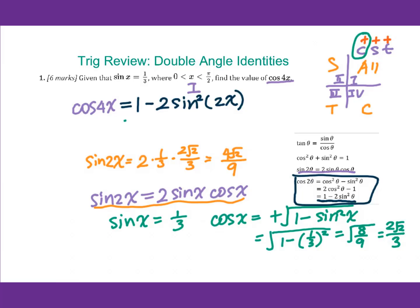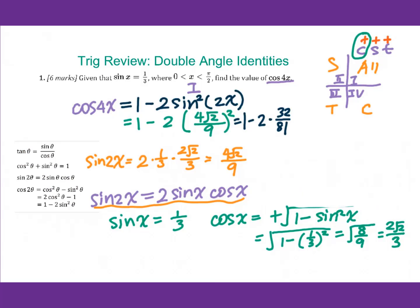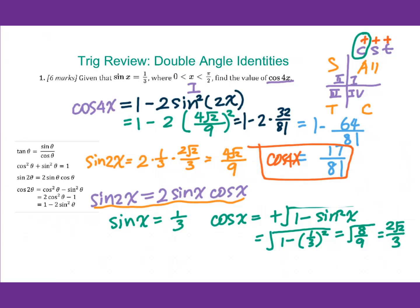Now I need to plug into the formula: 1 minus 2 times (4√2/9) squared. That gives 1 minus 2 times 32 over 81, which equals 1 minus 64 over 81, which equals 17 over 81. So cosine 4x equals 17 over 81.